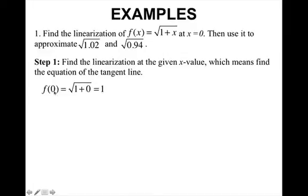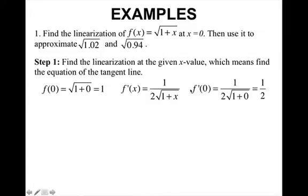So I first have to find the y value at x equals 0, which is 1. Then I have to find the derivative, and I had to use the chain rule. Then I need to find the value of the slope of the tangent line at x equals 0, which gives me 1/2. And then I can write my equation of my tangent line.